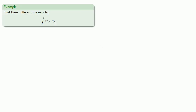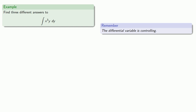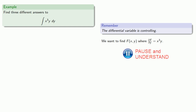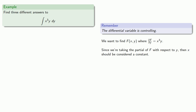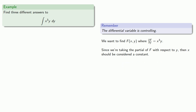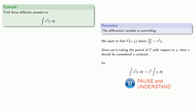For example, we might find different answers to the integral of x cubed y dy. Remember, the differential variable is controlling, which means we want to find a function whose partial with respect to y is equal to x cubed y. Since we're taking the partial of f with respect to y, x should be considered a constant. If x can be considered a constant, we can move it outside of the integral and then evaluate normally.